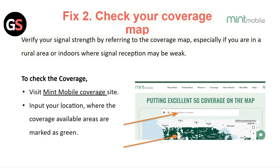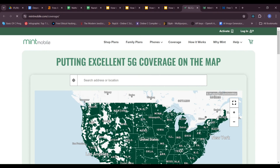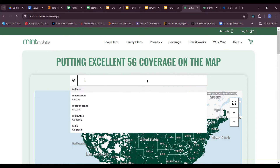Fix 2: Check your coverage map. Verify your signal strength by referring to the coverage map, especially if you are in a rural area or indoors where signal reception may be weak. To check coverage, visit the Mint Mobile coverage site and input your location — available coverage areas are marked in green.